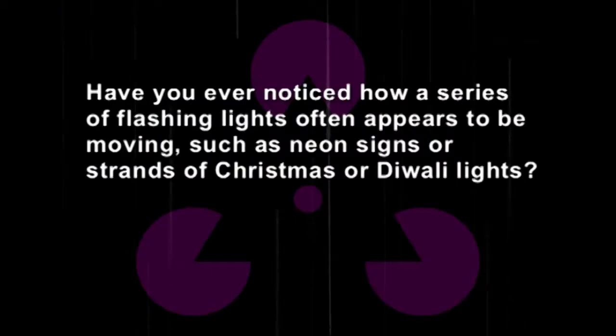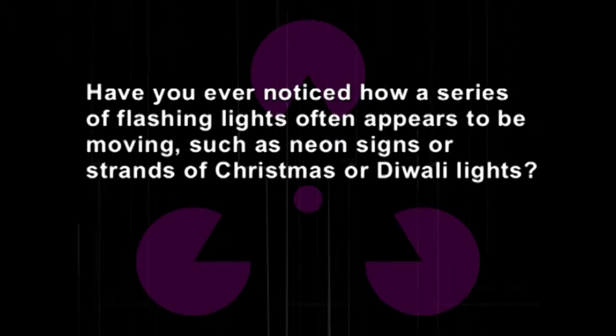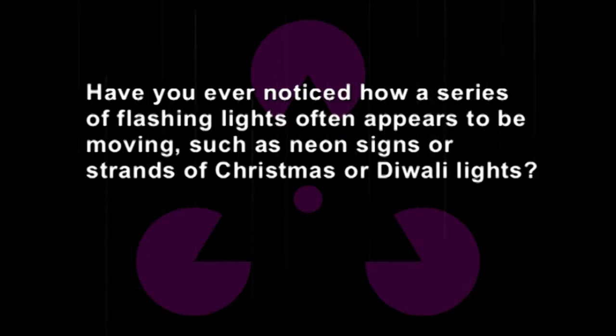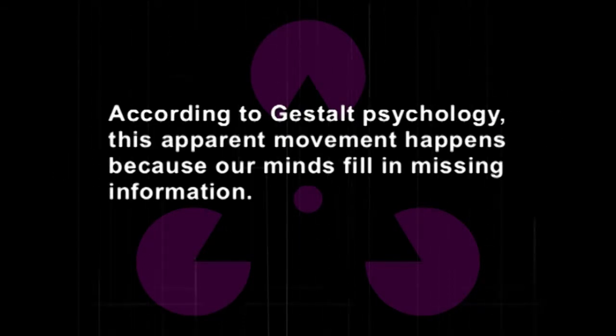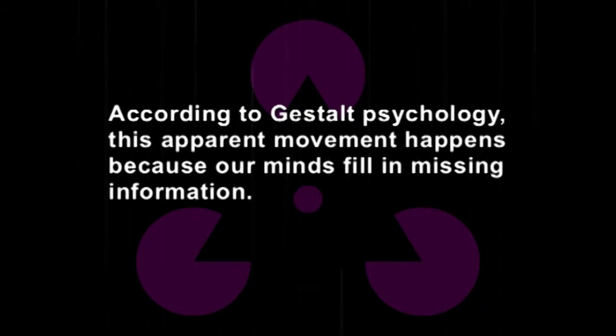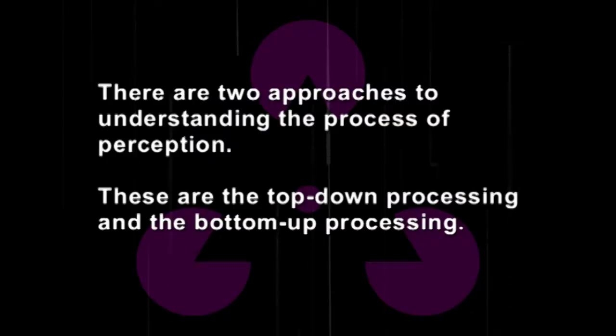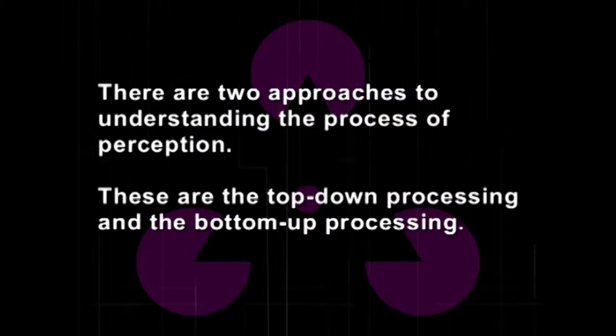For example, have you ever noticed how a series of flashlights often appears to be moving, such as neon signs or strands of Christmas or Diwali lights? According to Gestalt psychology, this apparent movement happens because our mind fills in missing information. This belief that the whole is greater than the sum of its individual parts led to the discovery of several different phenomena that occur during perception. There are two approaches to understanding the process of perception.